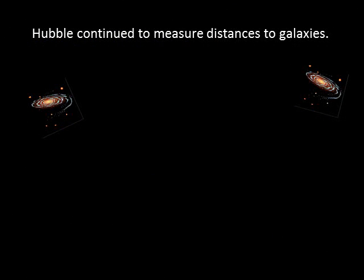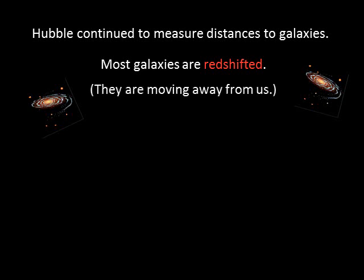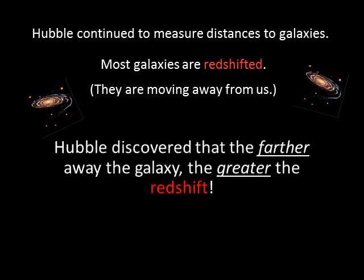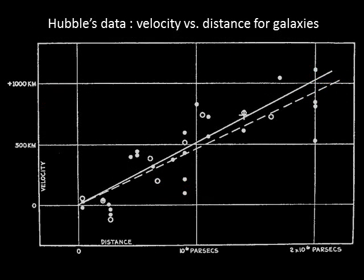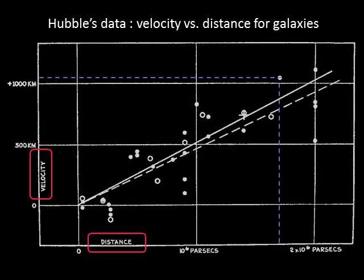Hubble's Andromeda galaxy distance measurement set the stage for an even greater discovery. Hubble continued to measure the distances to other galaxies and found something very interesting. Astronomers knew that most galaxies were redshifted, and therefore must be moving away from us. Hubble found that the farther away a galaxy, the greater its redshift. Here is Hubble's plot of velocity versus distance — each circle represents a galaxy. The more distant the galaxy, the faster it's moving away from us.